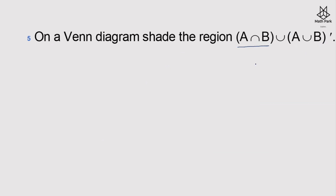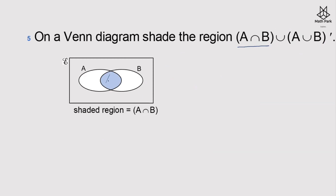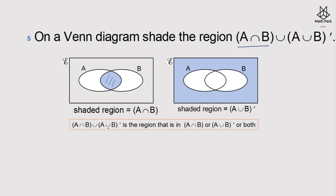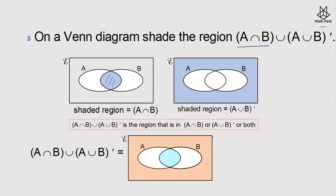On a Venn diagram, shade the region (A∩B)∪(A∪B)'. First, A∩B is the common region between A and B. Then (A∪B)' is the complement of A∪B — everything not in A∪B. The union of these two gives us A∩B plus (A∪B)': the central overlap of A and B, together with the region outside both A and B.